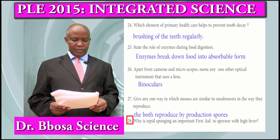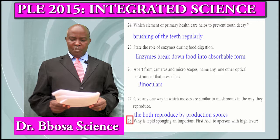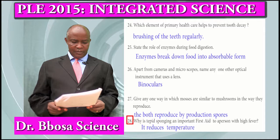Question 28: Why is tepid sponging an important first aid to a person with high fever? It reduces temperature.